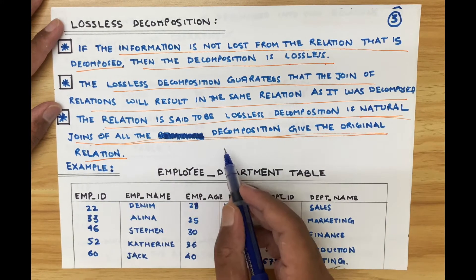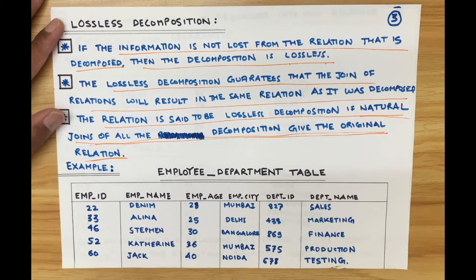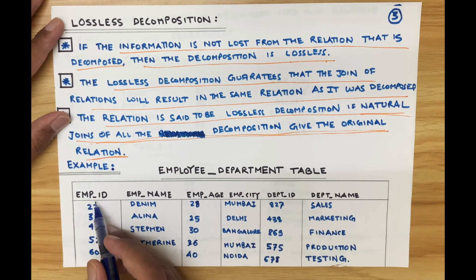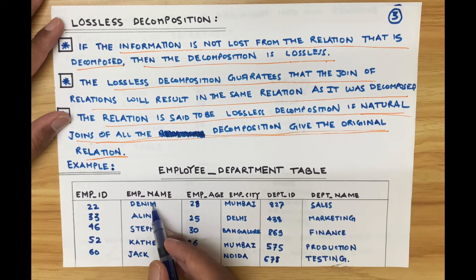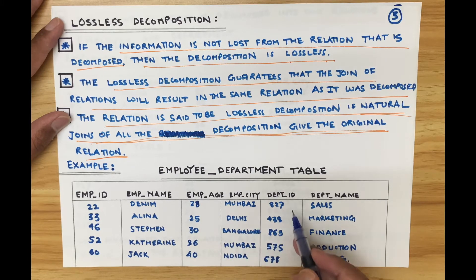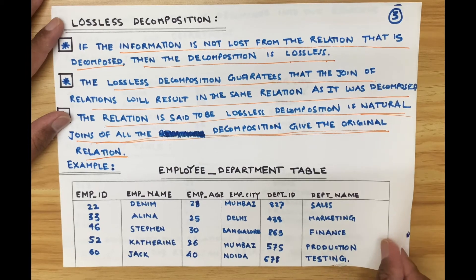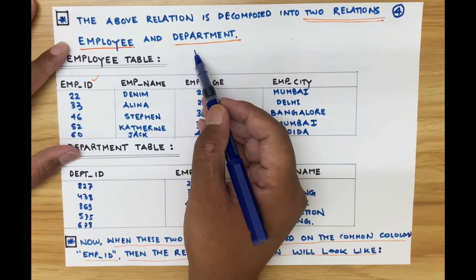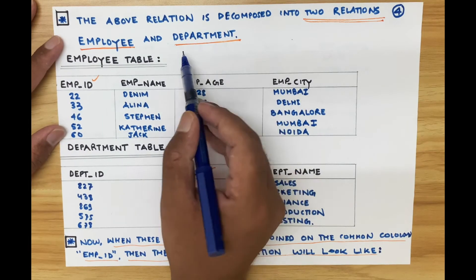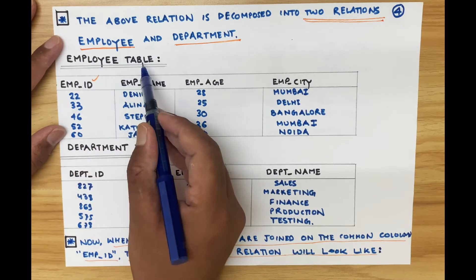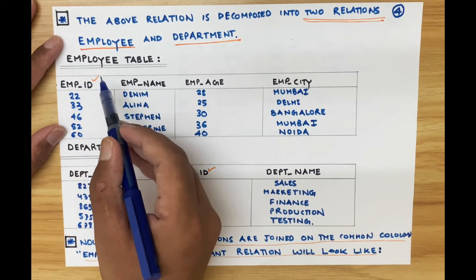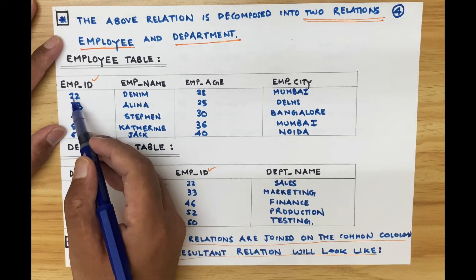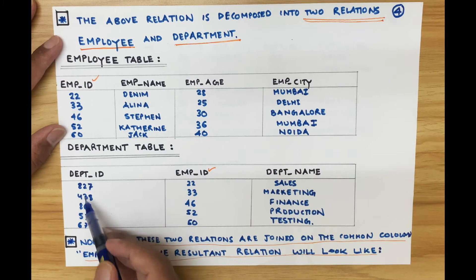For an example, I have given an employee-department detail table. The employee IDs are 22, 33, 46, 52, and 60, along with employee names, ages, cities, department IDs, and department names. The above relation is decomposed into two relations — employee and department — to reduce redundancy and bring it to normal form. Employee details are in a separate table and department details are in a separate table.